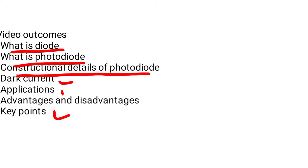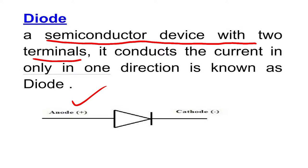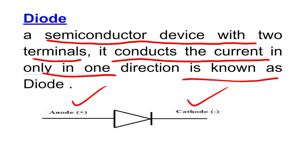Let's see first what is a diode. A diode is a semiconductor device with two terminals. The first terminal is the anode and the other one is the cathode. It conducts current in only one direction — this is known as a diode.